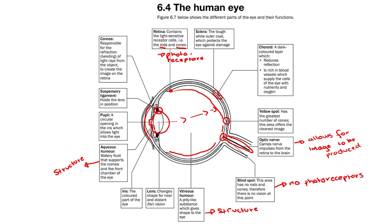Lastly, we have the sclera, which is the last layer behind the choroid. It is a tough white outer coat which protects the eye from damage. And that's all for this video. Thank you.